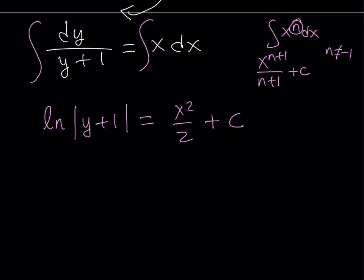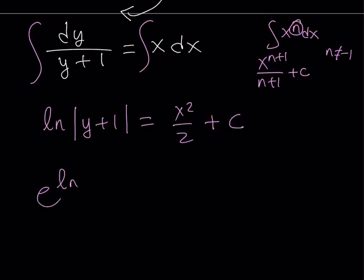So, let's go ahead and raise e to the power of both sides. And now we're going to get e to the power ln absolute value of y plus 1. I have to use the absolute value, because I don't know if y plus 1 is positive or negative.